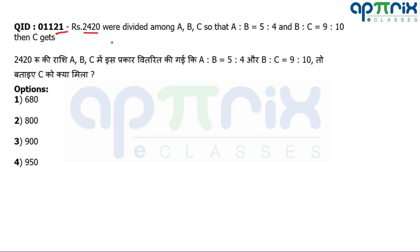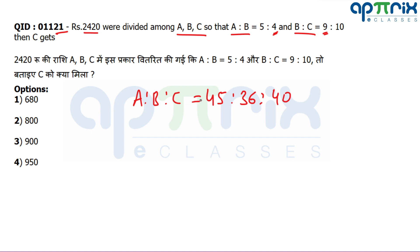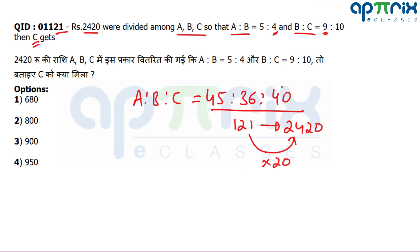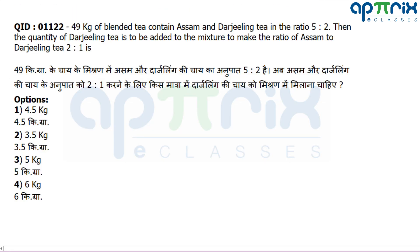Question 21 says that ₹2420 were divided among A, B, C where ratios A:B and B:C are given. To find how much C gets, find the combined ratio of A:B:C. The common element is 4 and 9 — make them both 36. Multiply to get 45:36, then multiply the other side by 4 to get 40. Sum all parts to get 121, and since 121 parts equals ₹2420, the multiplier is 20. C gets 40 × 20 = ₹800.